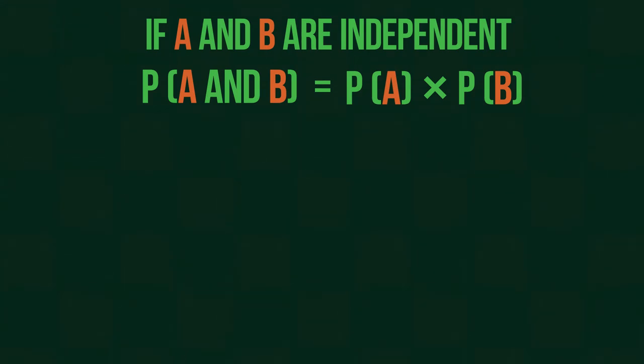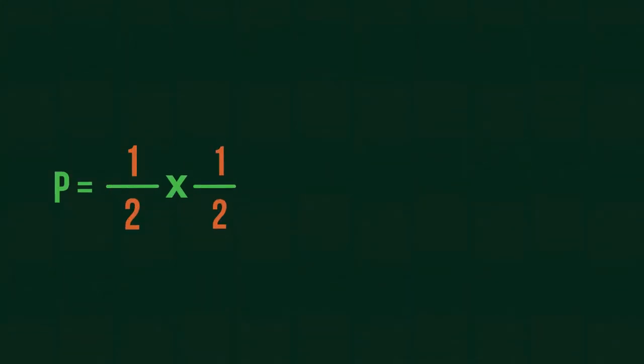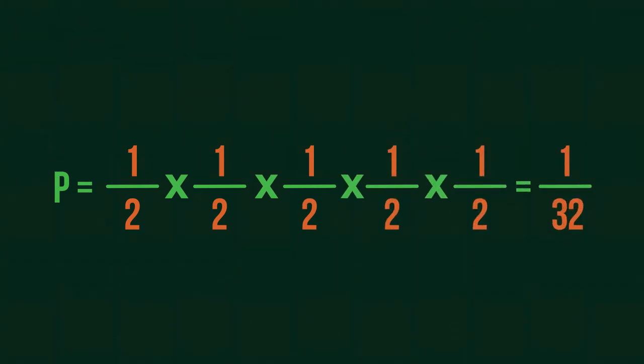So, what is the probability of getting five tails in five flips? Here, we don't need to model a big sample set for all possible outcomes. We know that flips are independent, so we can just multiply the probabilities of tails in each round.